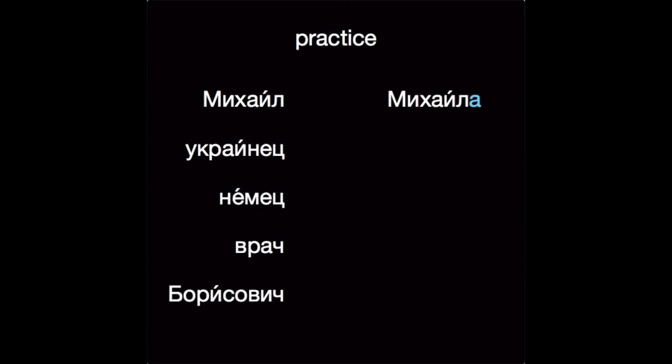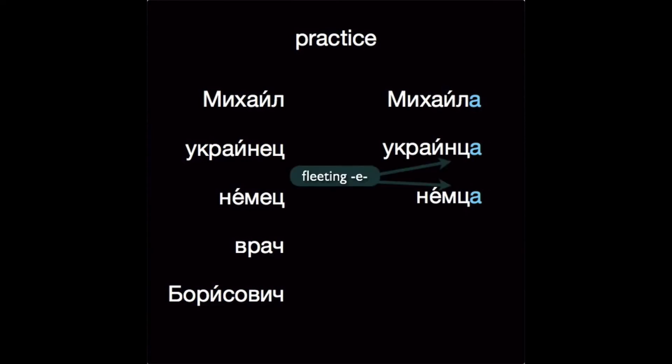Let's do a little more practice. Михаил → Михаила. Украинец → украинца. Немец → немца — watch the fleeting Е for those two. Врач → врача. Борисович → Борисовича.